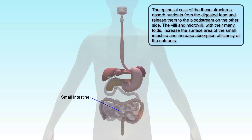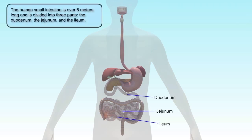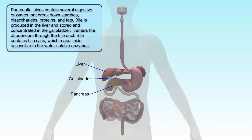The villi and microvilli increase the surface area of the small intestine, which increases absorption efficiency of the nutrients. The human intestine is over 6 metres long and is divided into 3 parts: the duodenum, the jejunum, and the ileum. Pancreatic juices contain several digestive enzymes that break down starches, disaccharides, proteins, and fats.